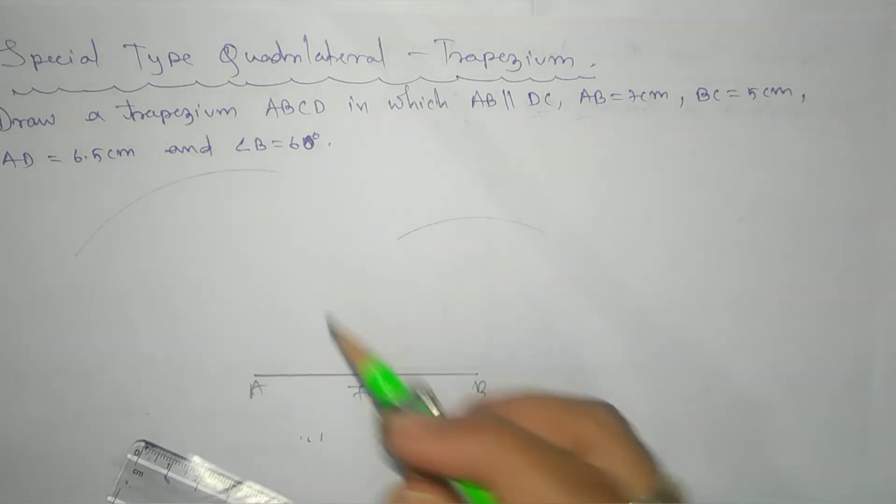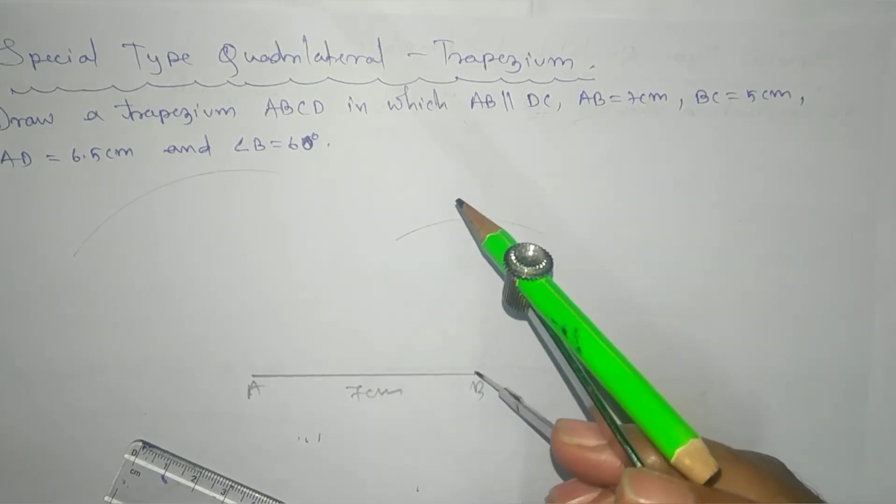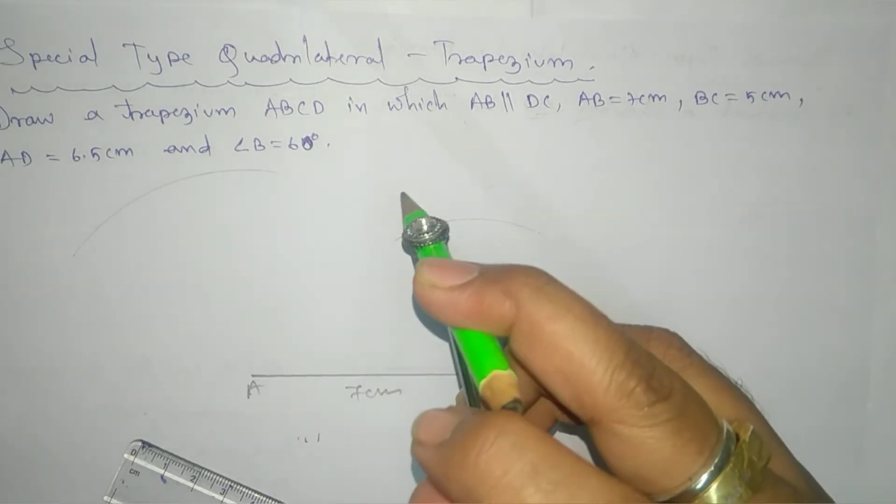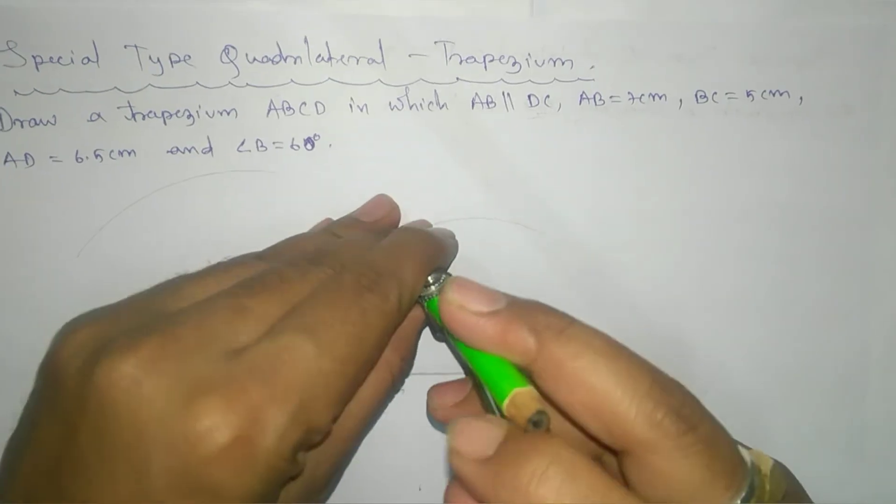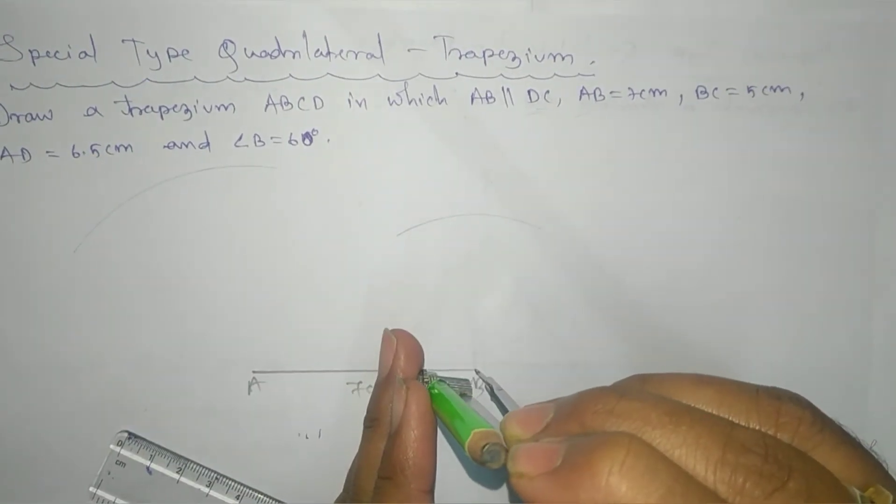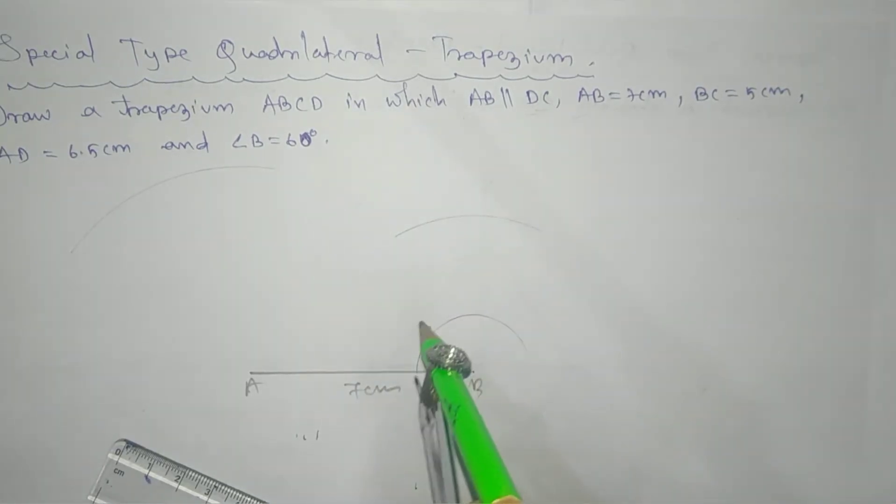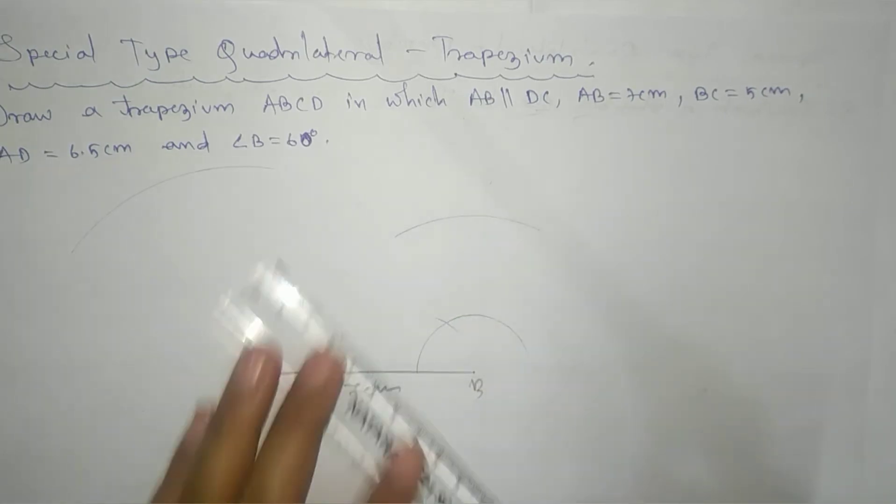Now we have angle 60 degrees. So we have an angle 60 degrees. First we'll go for the 60 degrees using protractor or compass. Generally we'll go for straight angle compass, so here we have 60 degrees. So extend here.